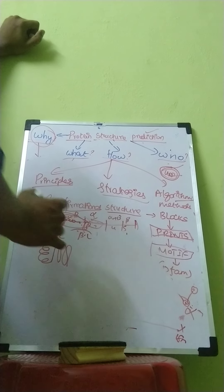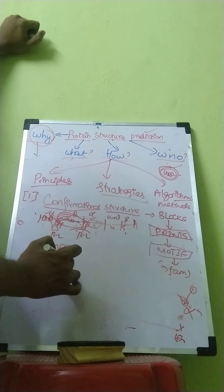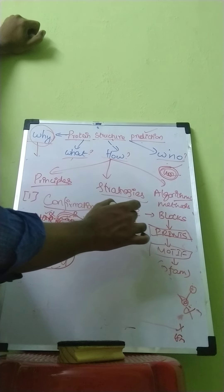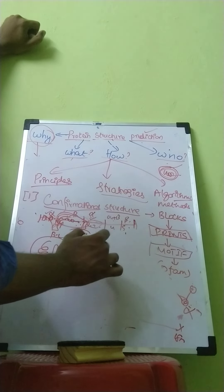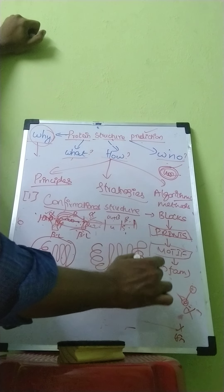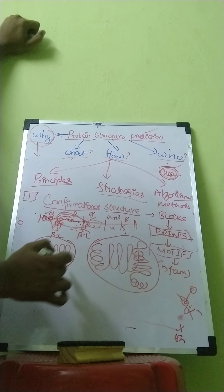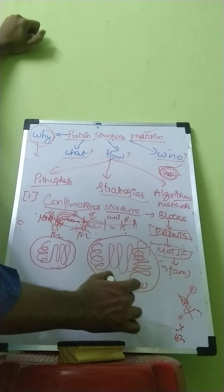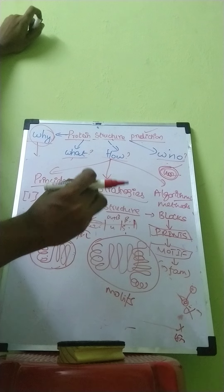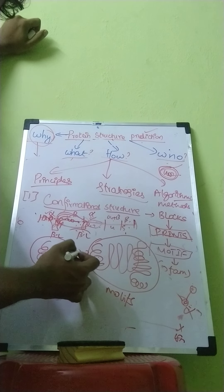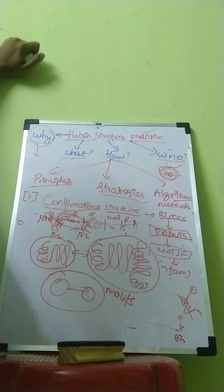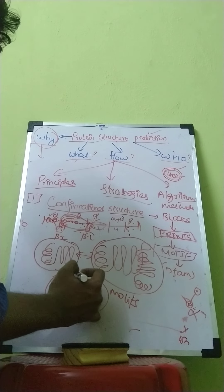Those are otherwise called motifs. They are the primitive forms of tertiary structures. Motif forms in which, for example, these two blocks together form alpha helix and beta — they form one small complex sub-structure. And alpha, alpha, beta, and beta — these three, four, five blocks may form another compact structure. These two structures individually are called motifs.